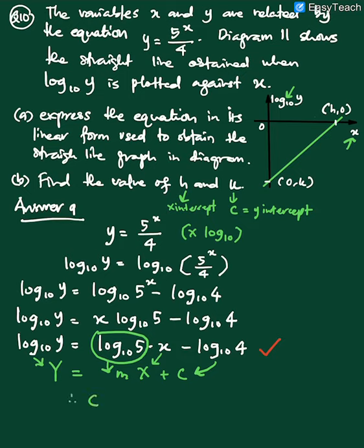So means that we find C first. So C, it is our Y intercept. And it is also equal with the value of K here. Calculate first, negative log base 10 4. So K equal negative 0.6021. So this is answer for K.